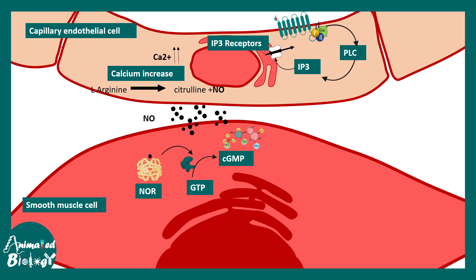The nitric oxide receptor in the smooth muscle cell activates an enzyme that converts GTP into cyclic GMP. Cyclic GMP then binds to a kinase known as protein kinase G — analogously to how cyclic AMP binds to protein kinase A.